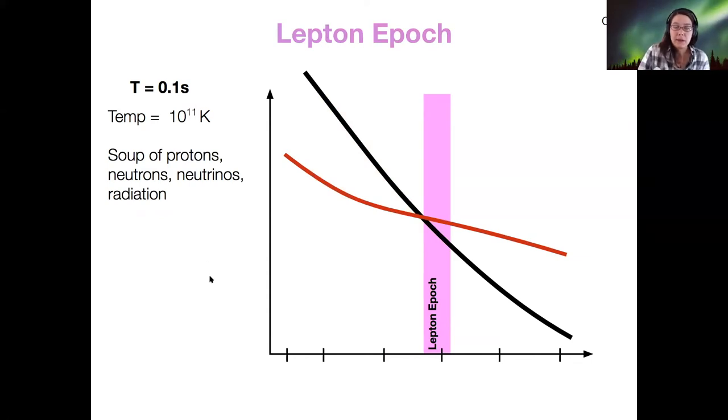So after the quark epic, we have our lepton epic. Remember the quarks were the matter particles that form nuclei and the leptons are our electrons and our neutrinos. And so during the lepton epic, those light particles, electrons are pretty light. Neutrinos are really light particles. Those freeze out now because finally the temperature is low enough that they can exist. So basically our early universe at this time now contains protons and neutrons. Remember they're allowed to form now that we have gluons, neutrinos, and then radiation. We've been awash in radiation this whole time.